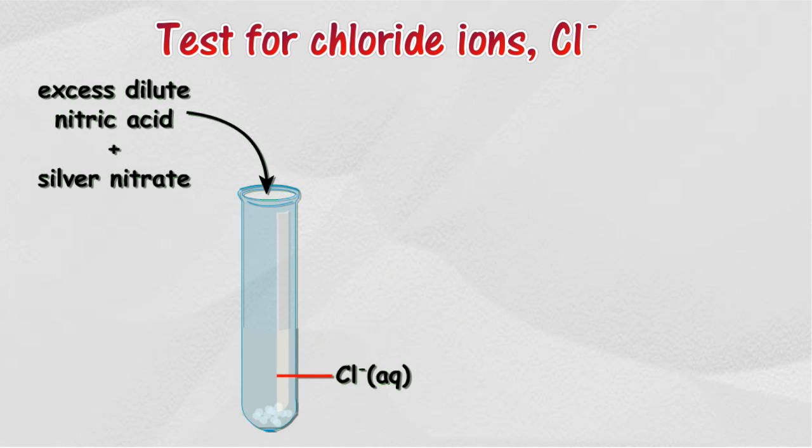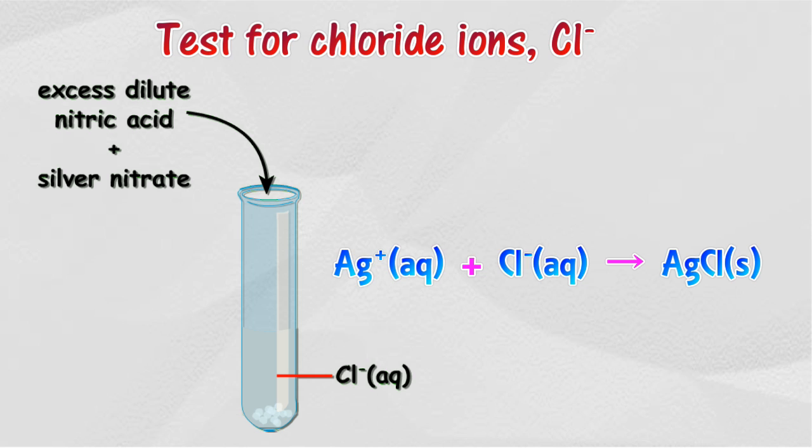Chloride ion test: about two cubic centimeters of a chloride solution is mixed with dilute nitric acid, followed by silver nitrate solution. A white precipitate of silver chloride forms, confirming the presence of chloride ions.